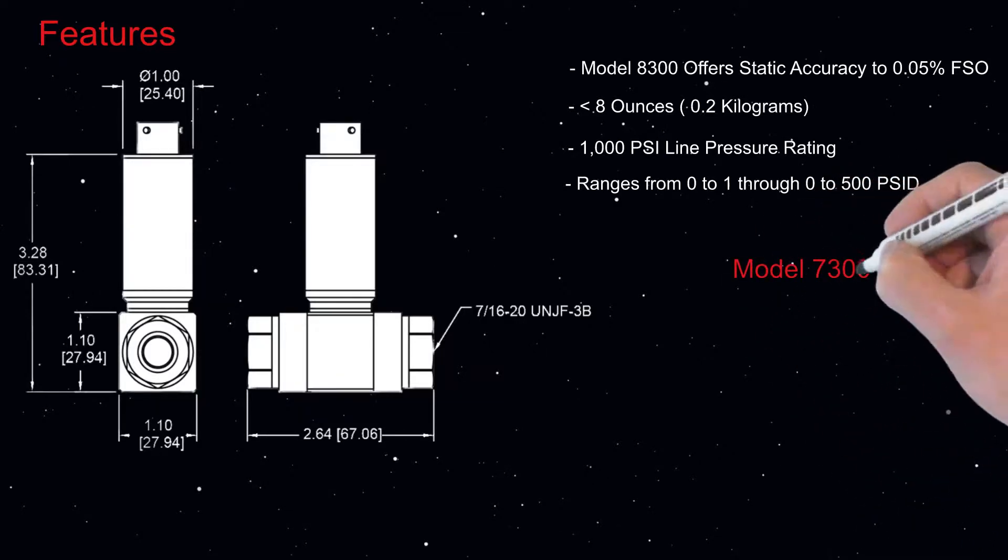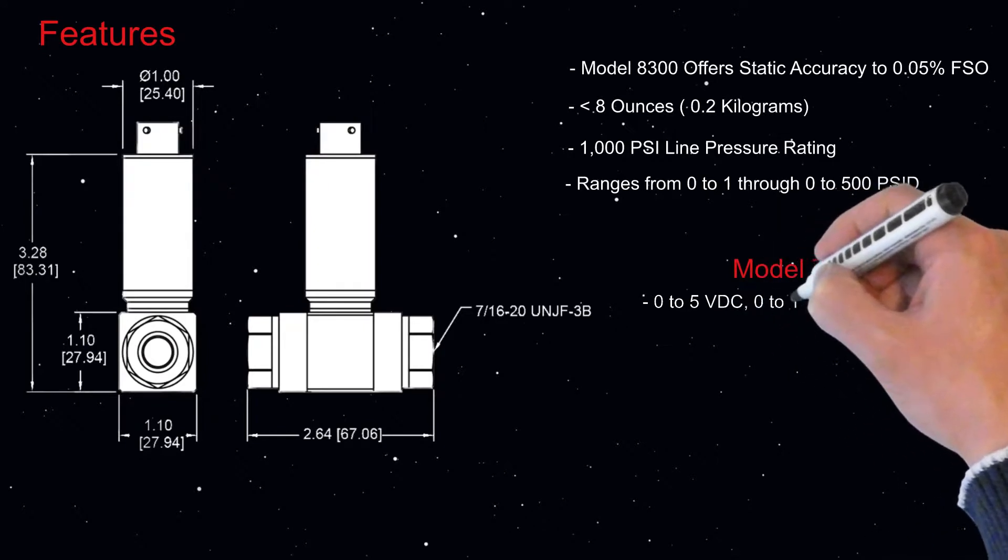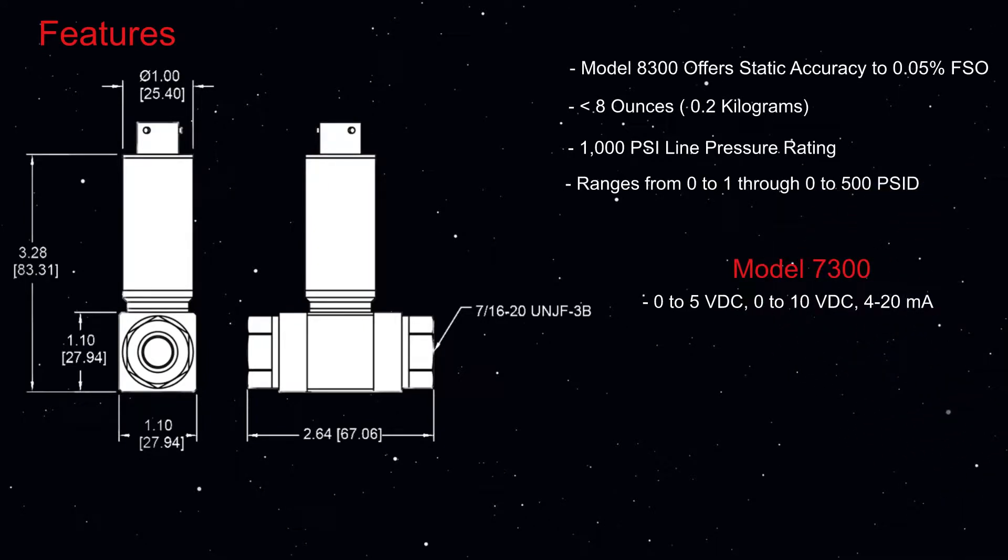For outputs, the Model 7300 comes in 0 to 5 VDC, 0 to 10 VDC, or 420 mA.